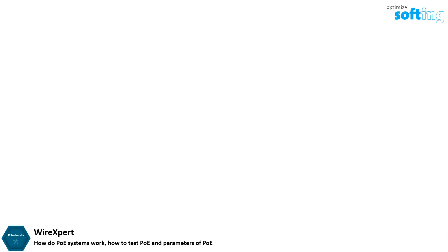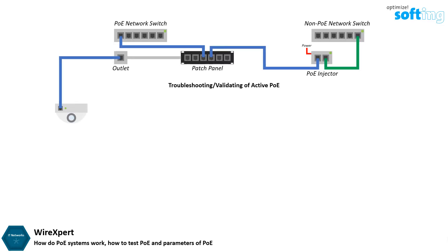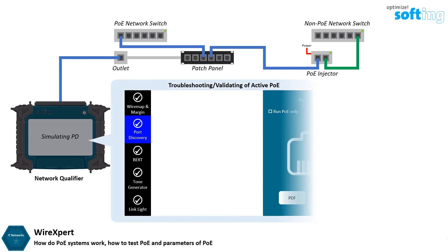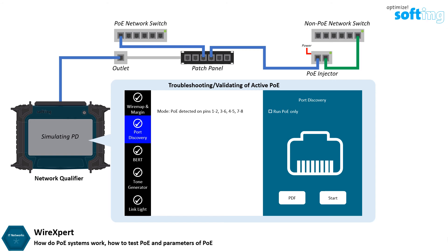The second type is the troubleshooting or validating of active PoE. A tester capable of testing PoE may typically validate the following when the cable is connected: the operation mode, whether it is mode A, mode B, or four-pair PoE; the polarity of the DC supply; the PoE type; and the power class of the PSE.